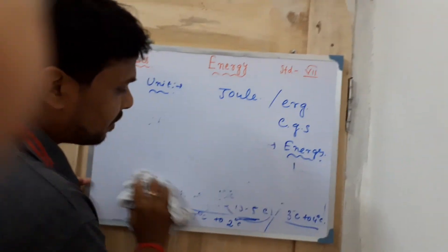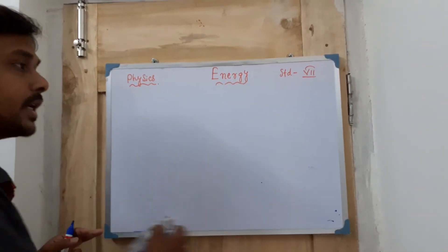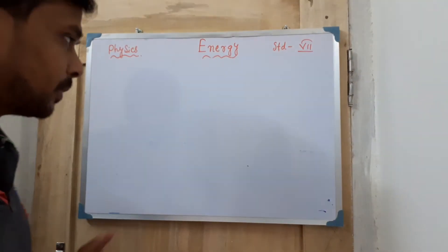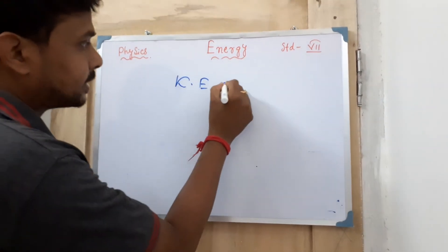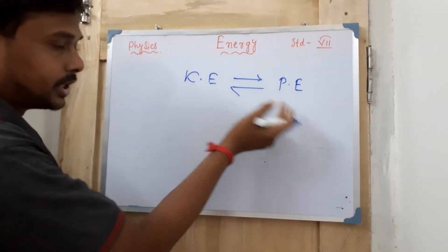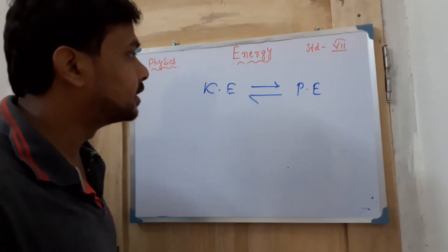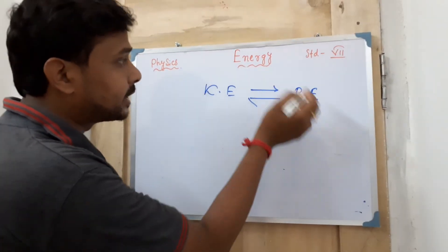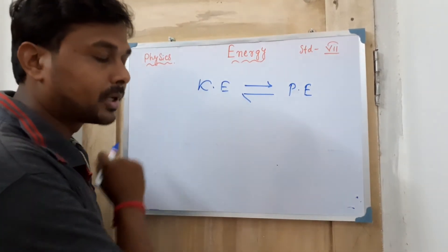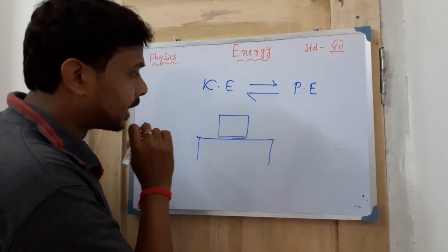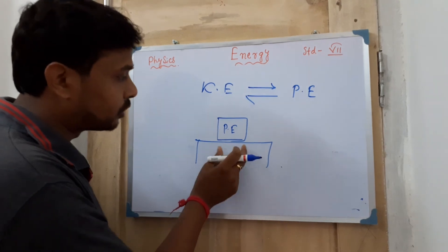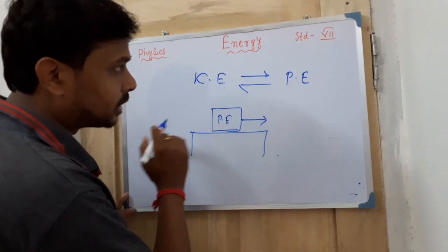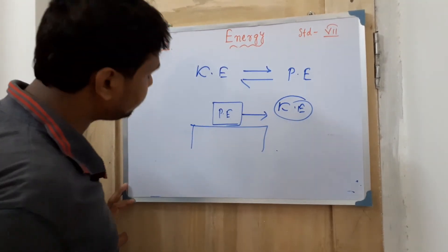The law of conservation of energy states that energy cannot be created and energy cannot be destroyed, but we can change energy from one form to another. For example, kinetic energy can be converted to potential energy and vice versa. In doing so, you have not created any energy or destroyed any energy — you have only changed the form. That is the law of conservation of energy.